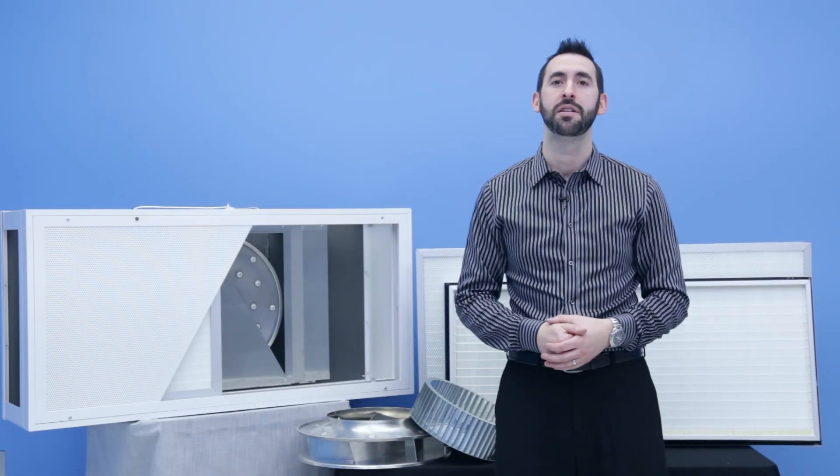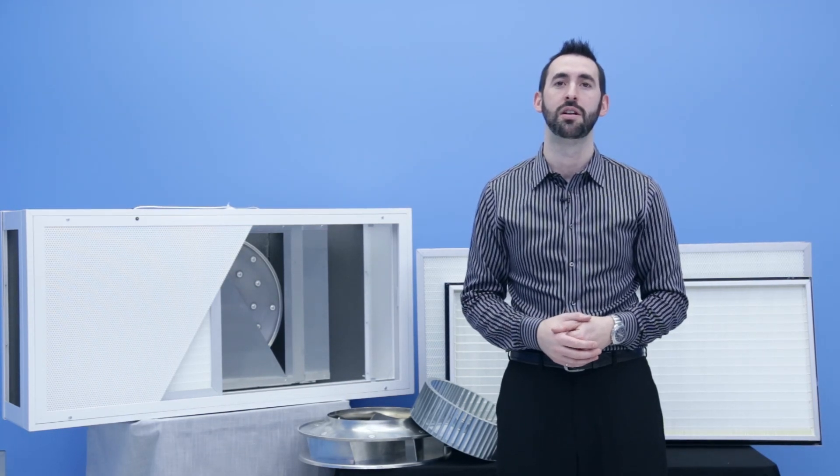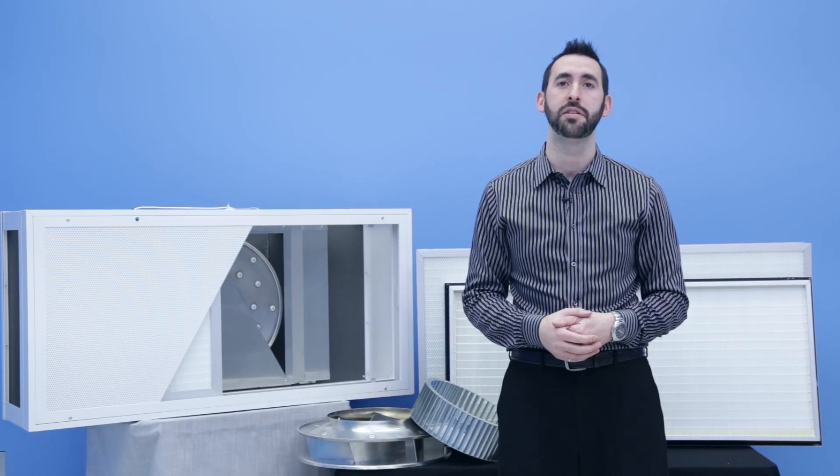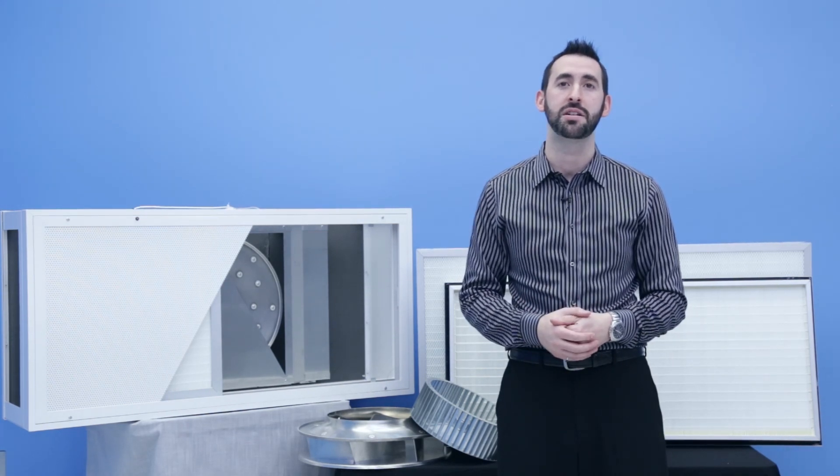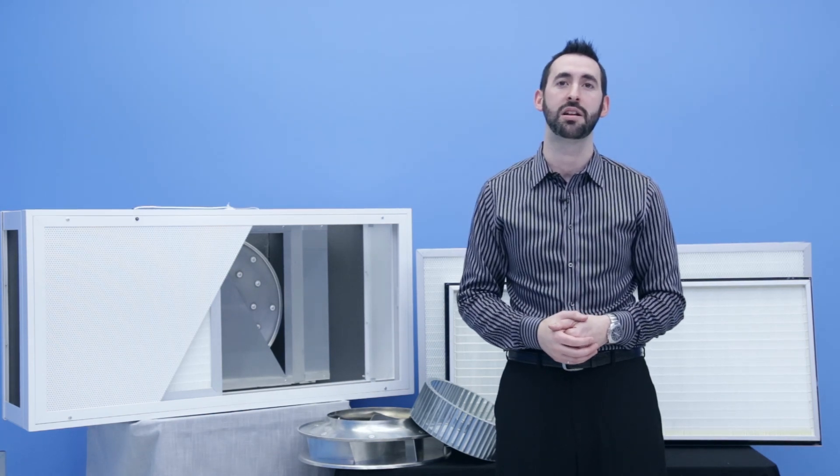When using an ECM there are two available motor programs, the first of which is constant flow. The constant flow motor program maintains the airflow through the fan filter unit independent of the static pressure as the filter loads. This is ideal for negative pressure common plenum designs.